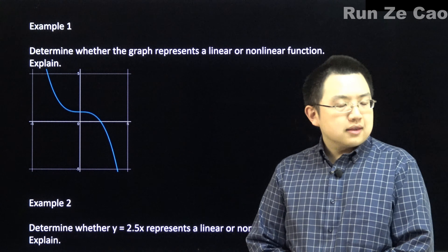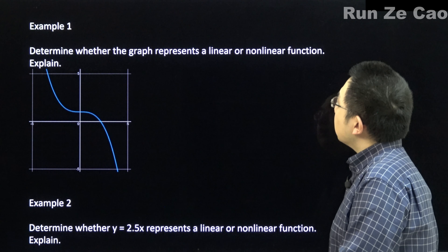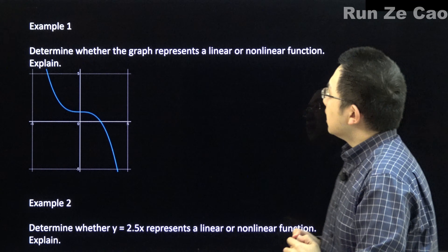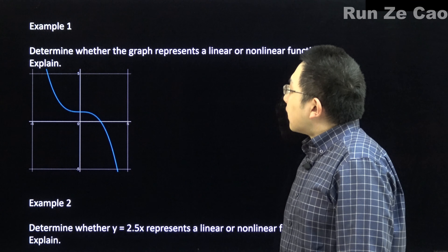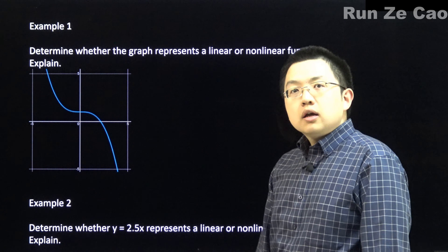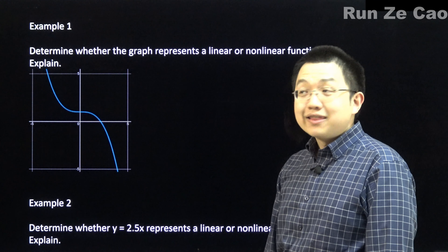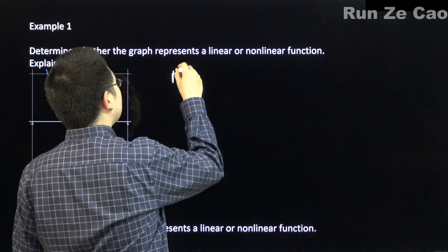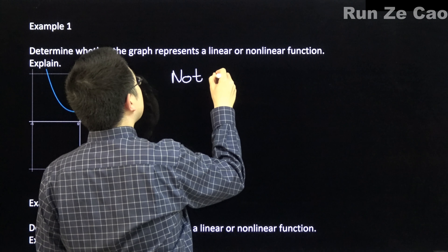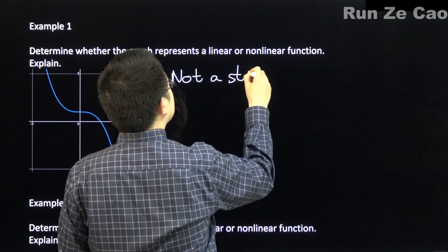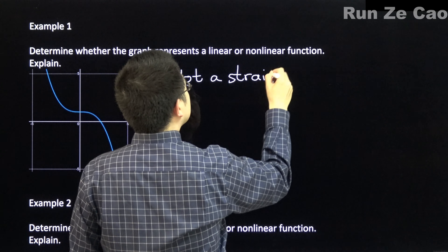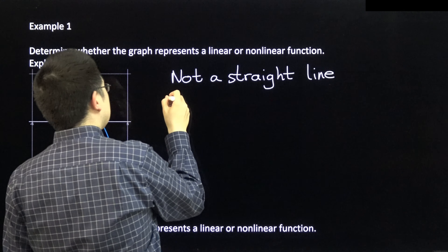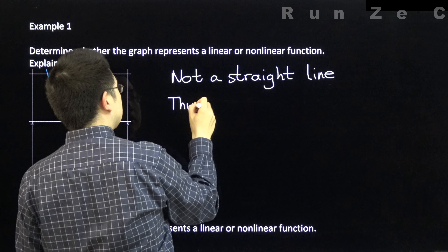Let's look at this example: determine whether this graph represents a linear or nonlinear function and explain. It's not a straight line, therefore nonlinear.